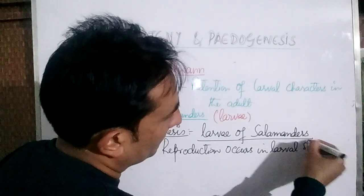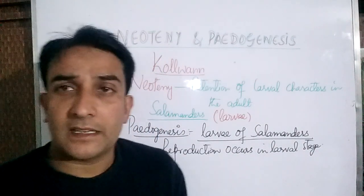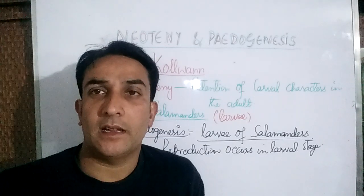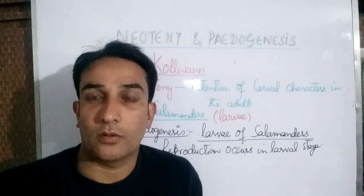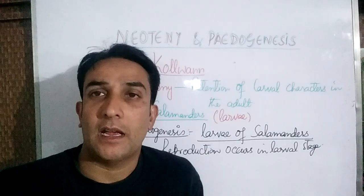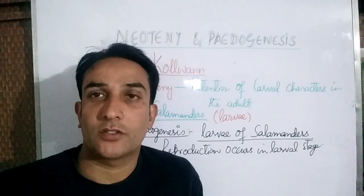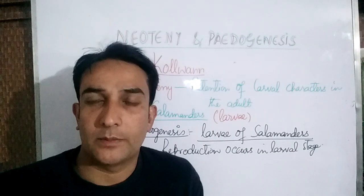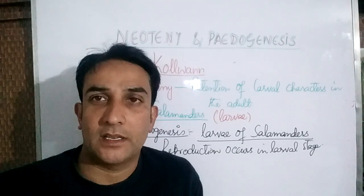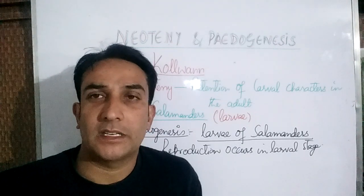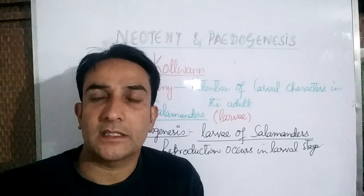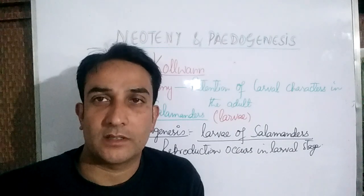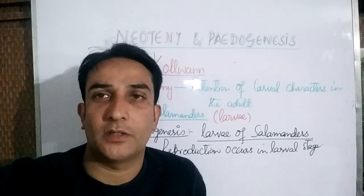Besides salamanders, many other organisms also show Pedogenesis. For example, the gallfly larvae also show pedogenesis — they show gonadal development and reproduction in the larval stage. The larvae of liver flukes also exercise reproduction, and all this is included in Pedogenesis. Simply put, Neoteny is the retention of larval characters in adults, and Pedogenesis is attaining sexual maturity or exercising reproduction in the larval stage.